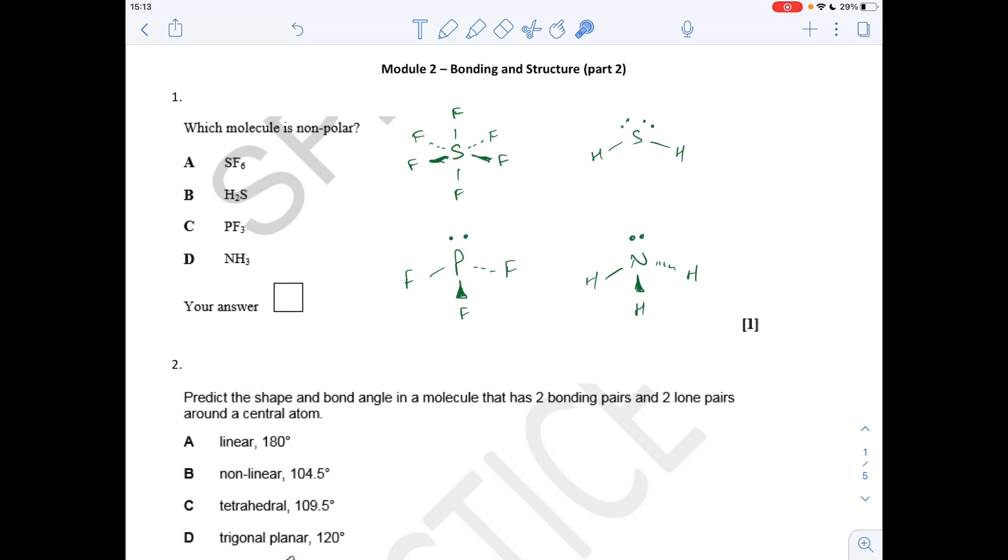Basically we're looking for a molecule that's totally symmetrical, and all the dipoles are going to cancel out as a result. These three here are all unsymmetrical molecules, so there will be overall dipoles on these molecules, so these will all be polar. This is completely symmetrical. All the dipoles in the SF bonds are going to cancel, and so the answer is A.